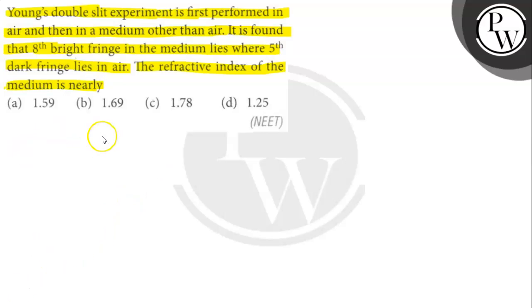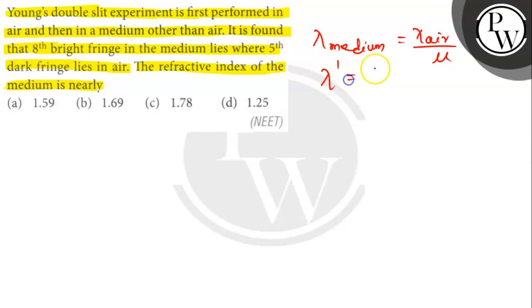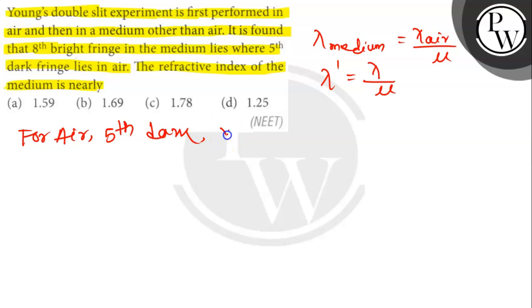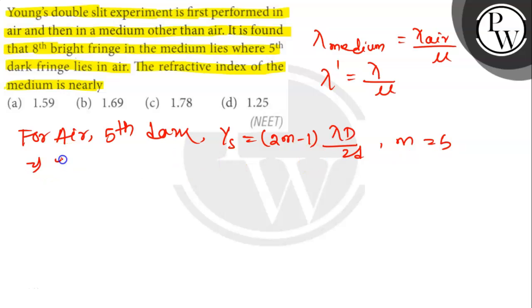Let's find out. In the medium, lambda_medium equals lambda_air divided by mu. So lambda dash equals lambda by mu. For air, the 5th dark fringe position is y_s = (2m - 1) * lambda * D / 2d, where m = 5. So y_s = 9 * lambda * D / 2d. This is for the dark fringe.